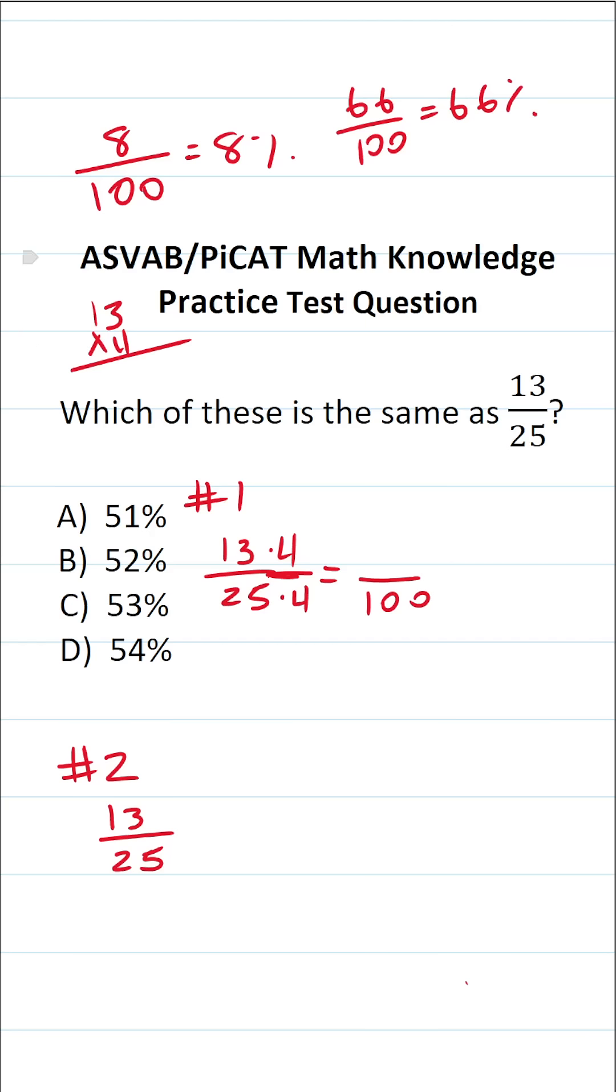13 times 4. 3 times 4 is 12. Carry a 1. 4 times 1 is 4 plus 1 is 5. So this is 52 over 100, which you should be able to say is 52%. So this one is B.